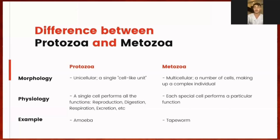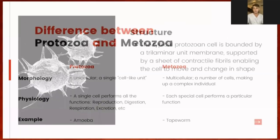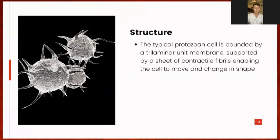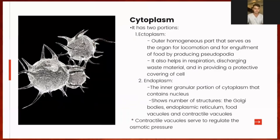An example of a Protozoan is Amoeba proteus, and for metazoans we have tapeworms, in particular Taenia solium or the pork tapeworm. The typical Protozoan cell is bounded by a trilaminar unit membrane, supported by a sheath of contractile fibrils, enabling the cells to move and change in shape. The cytoplasm consists of two distinct portions: the ectoplasm and the endoplasm. The ectoplasm refers to the outer homogenous part that serves as the organ for locomotion and functions in engulfment of food by producing pseudopodia. It also helps in respiration, excretion, and providing a protective covering for the cell.